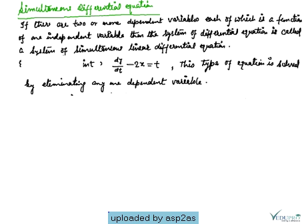The example is dx/dt + y = sin t and dy/dt - 2x = t. This type of equation is solved by eliminating any one dependent variable. So here we are going to take an example to understand it.